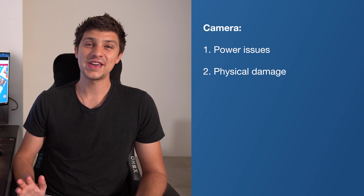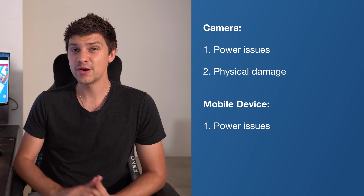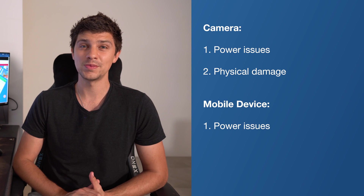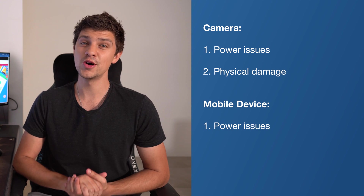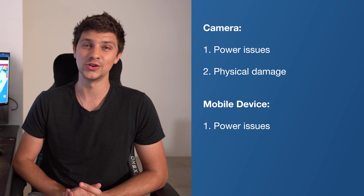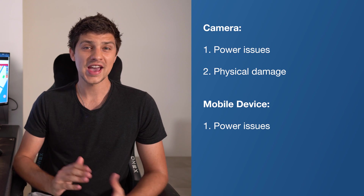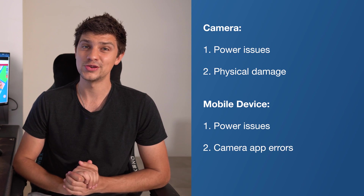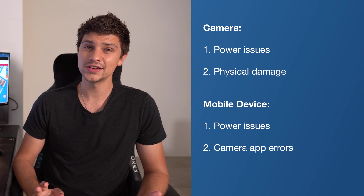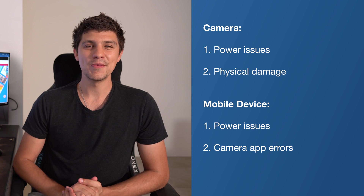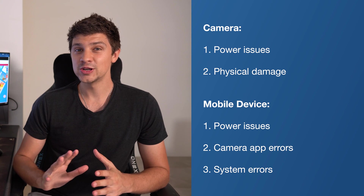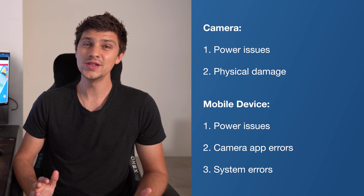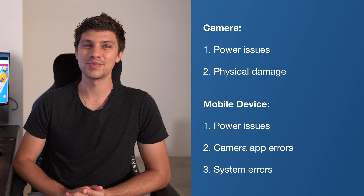Just like with cameras, power failure is another common cause for corrupted photos on mobile devices too. Another cause could be the camera app you're using to shoot running into unexpected errors, or there might be system errors with the device that are hindering the performance of the camera app.